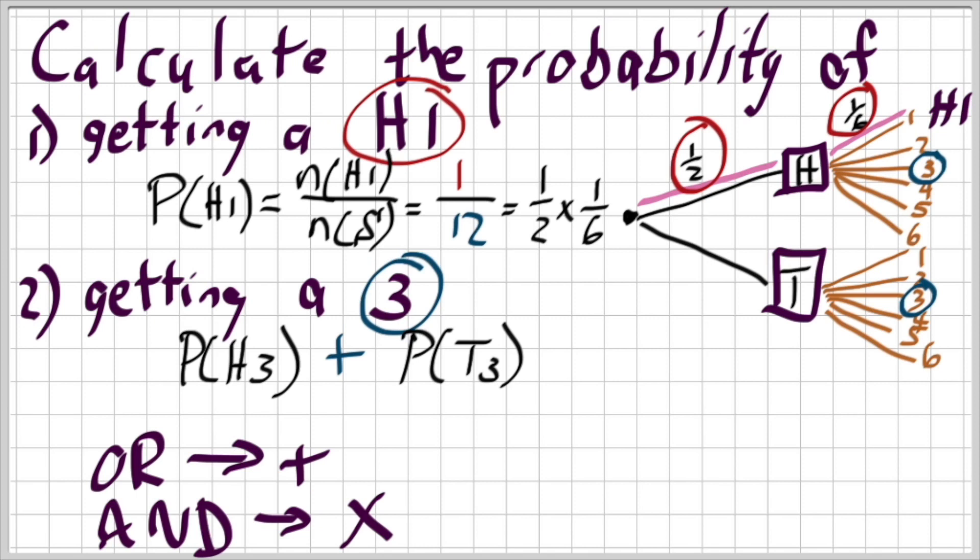So let's have a look. What is the probability of getting a head and a three? Well that is walking that road of a half times by one sixth. The probability of a tail and a three is again a half times by one sixth, which means it is one over six. I just typed that in my calculator. That is your answer.